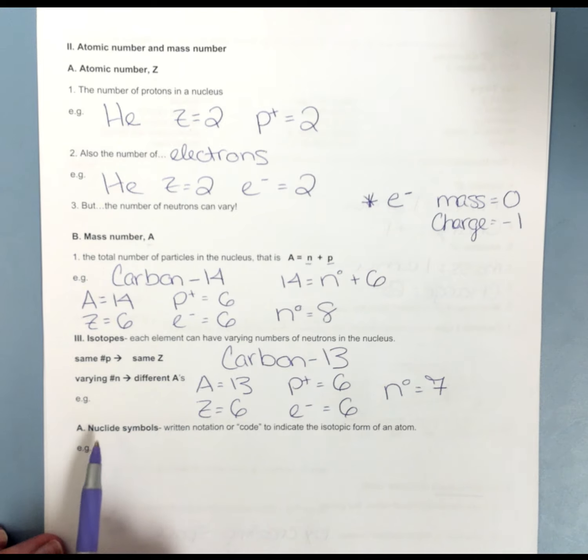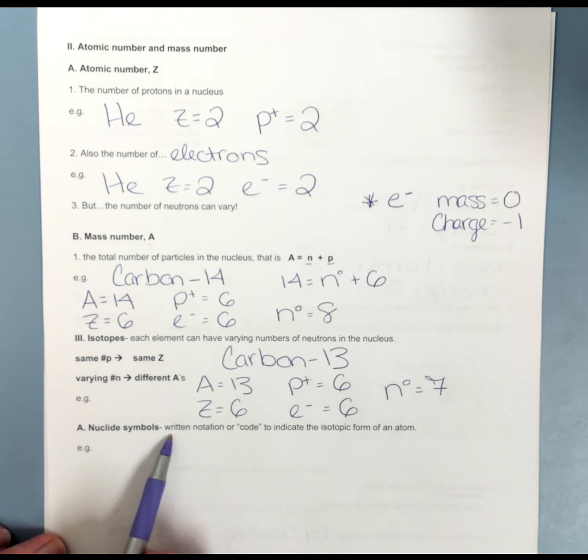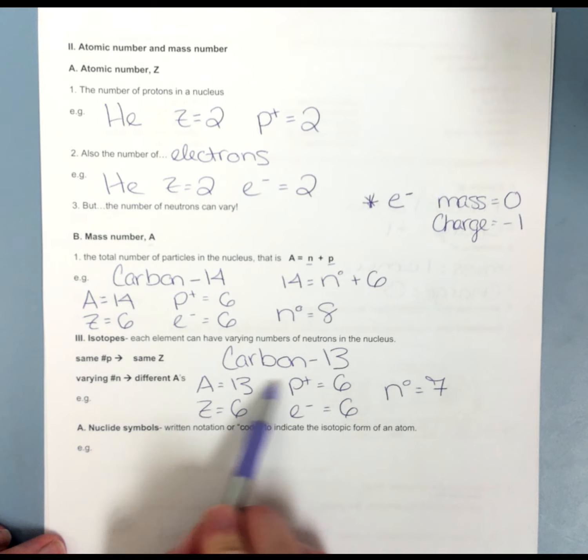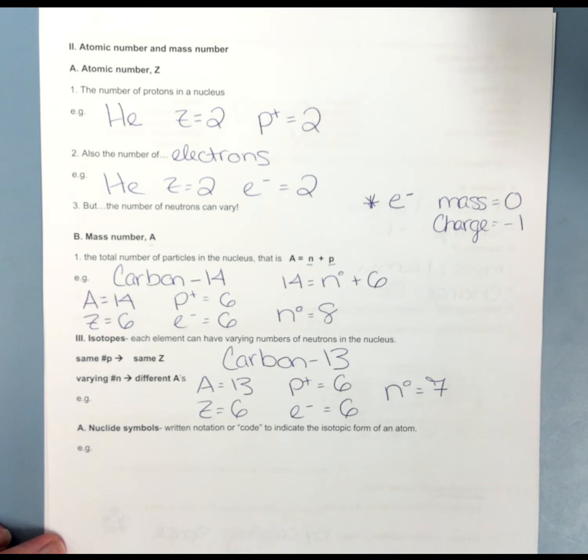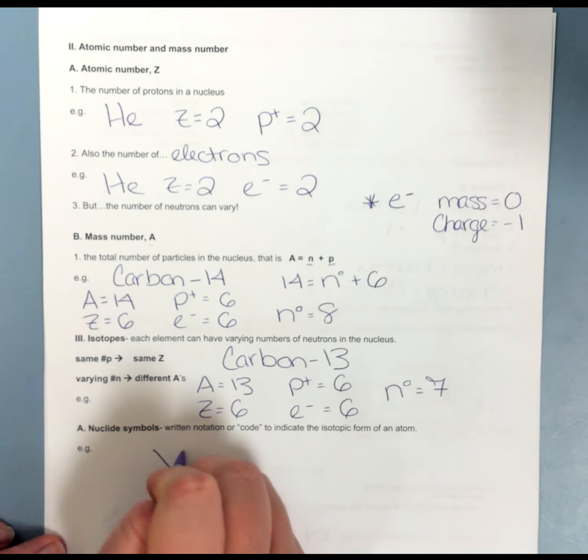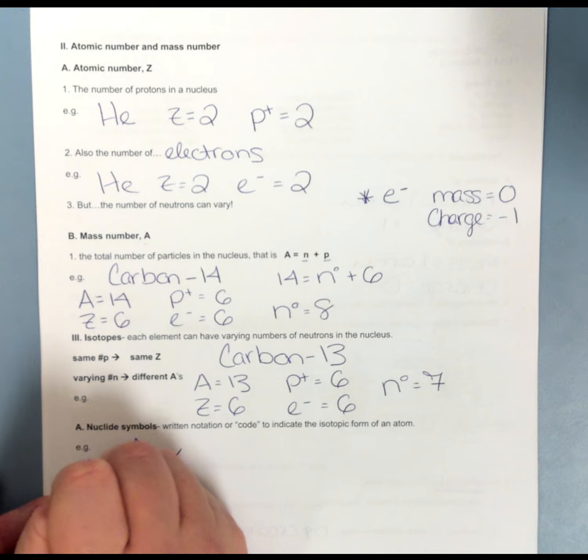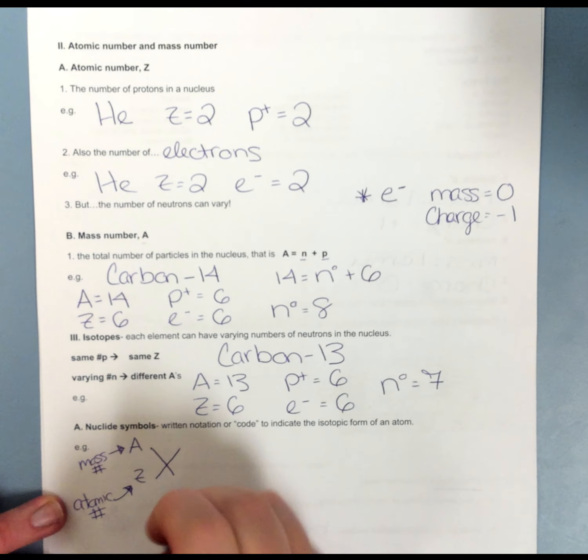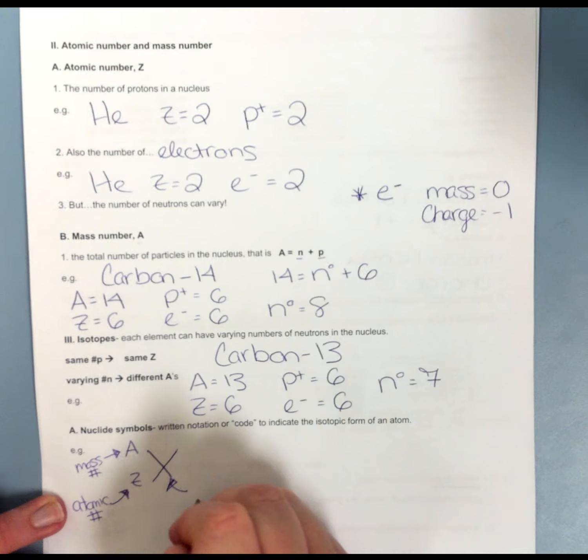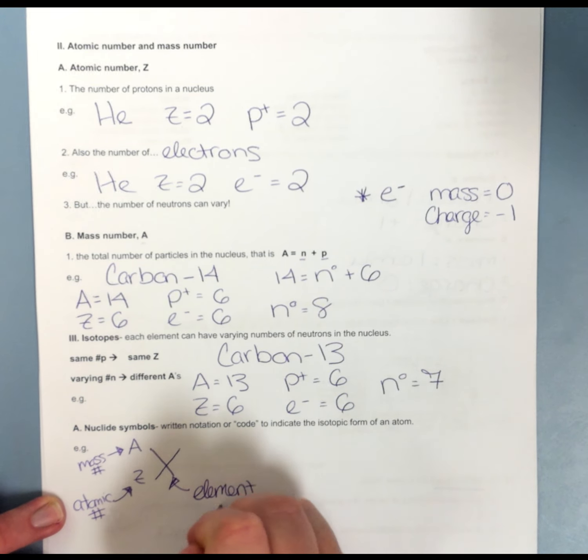Just to wrap up this section, we have what we call nuclide symbols. Sometimes you'll see it written like this where we have an element with the mass number. Other times, we'll see something that looks like this. My Z is my atomic number. My A is my mass number. And my X is my element symbol.